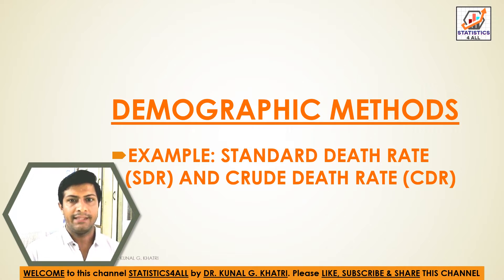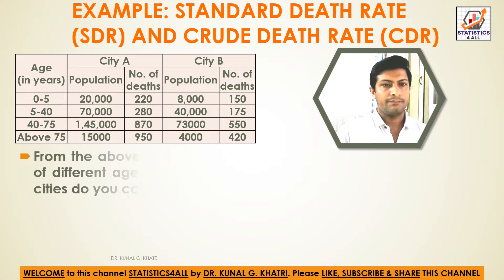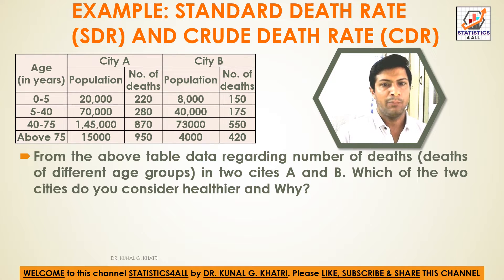Demographic methods example: Standardized Death Rate and Crude Death Rate, that is SDR and CDR. From the above table, data regarding the number of deaths of different age groups in two cities, A and B, is given. The age groups are 0 to 5, 5 to 40, and 40 to 75 and above 75. Population and number of deaths for both cities are provided.